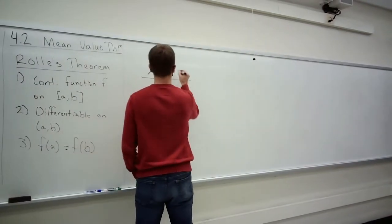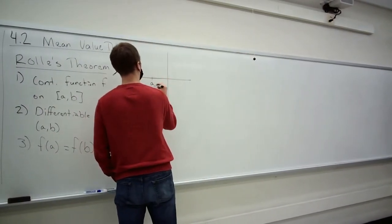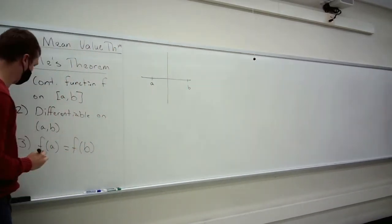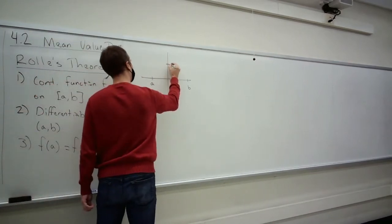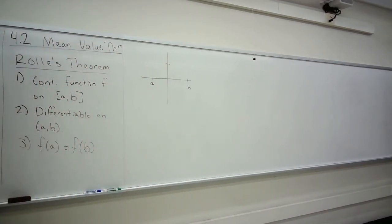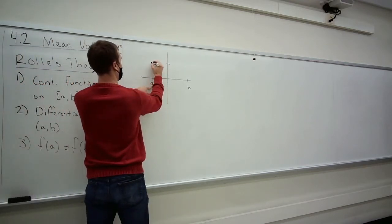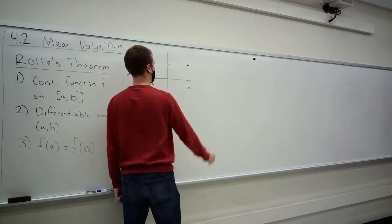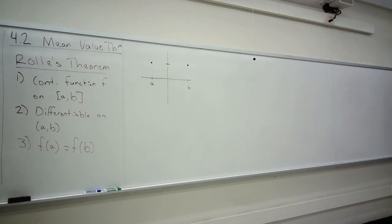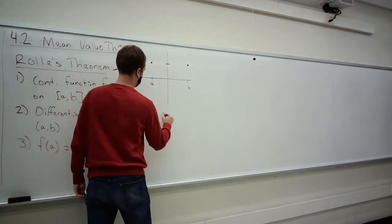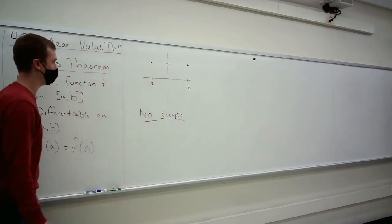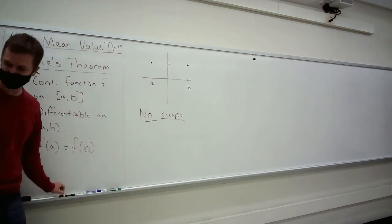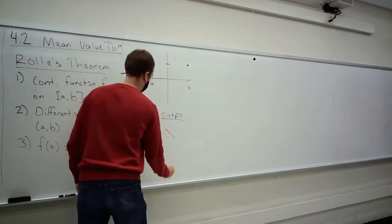So in pictures, Rolle's theorem can be applied to any function that looks something like this. We pick some height. The last requirement says that at our starting interval, we must have that height, and the ending height must be the same. And then in between, we must be differentiable, which means no cusps. A cusp is something that looks like a sharp point.